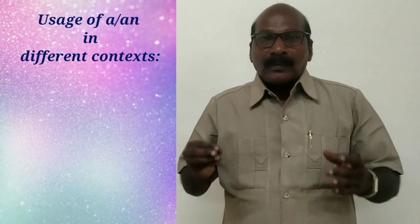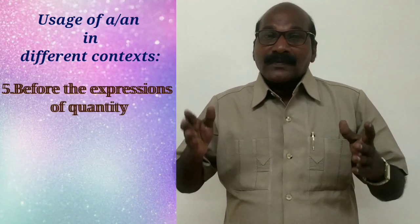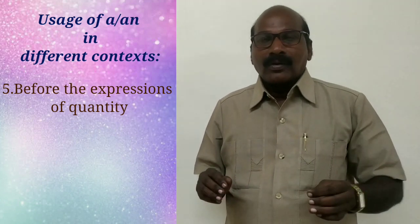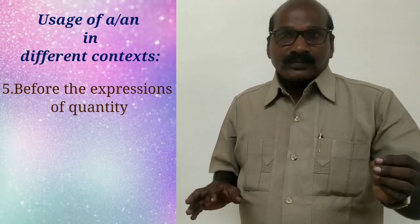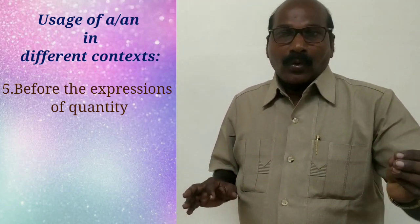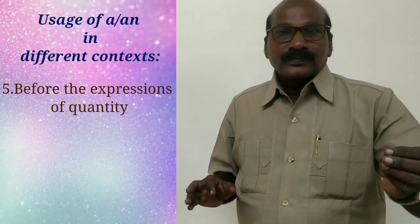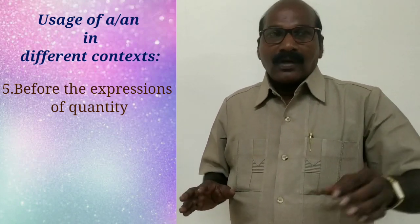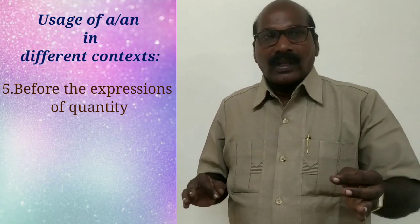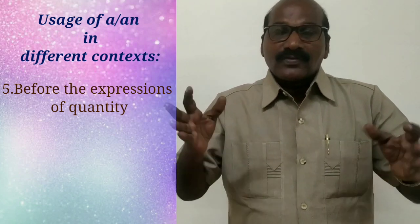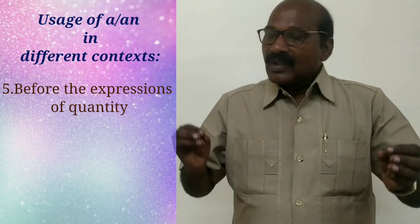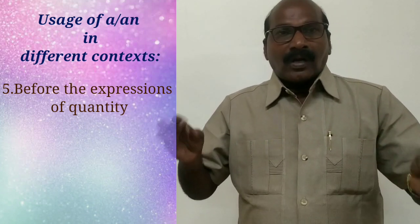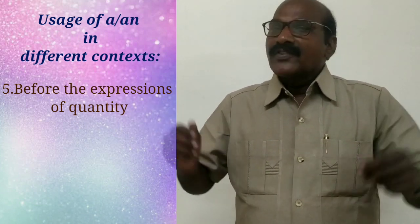And before expressions of quantity, we use the indefinite article. For example: a dozen (meaning 12), a score (meaning 20), a gross (meaning 12 dozen), a hundred, a thousand, a couple, a lot of, a number of, etc.